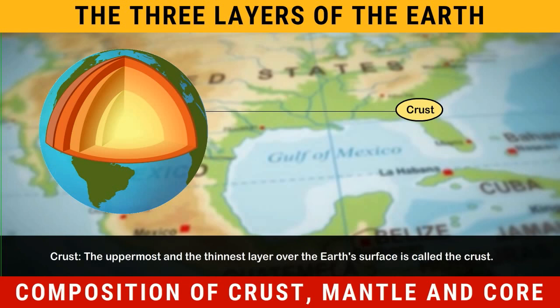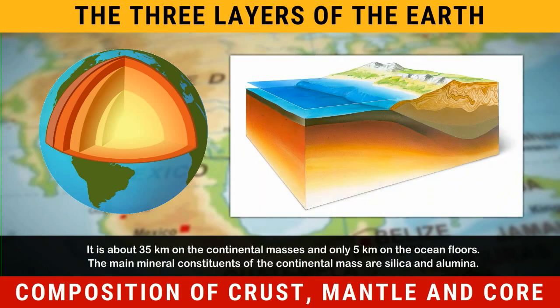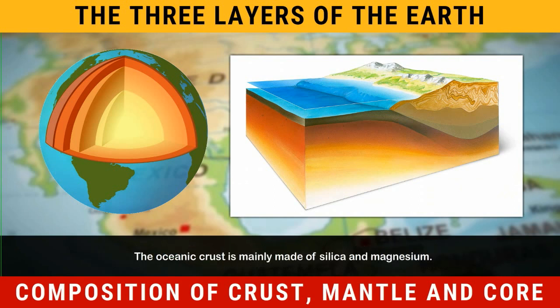The crust is the uppermost and the thinnest layer over the Earth's surface. It is about 35 km thick on the continental masses and only 5 km on the ocean floors. The main mineral constituents of the continental mass are silica and alumina, while the oceanic crust is mainly made of silica and magnesium.